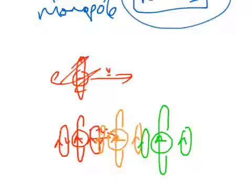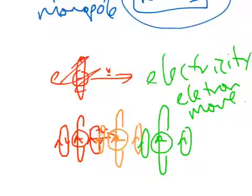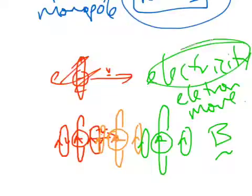So the link with this is that if electricity, and both DC and AC electricity, are to do with electron movement, then you will always have a magnetic field. There's always going to be a magnetic field where there's electricity.